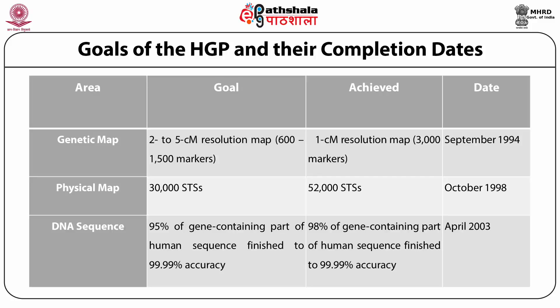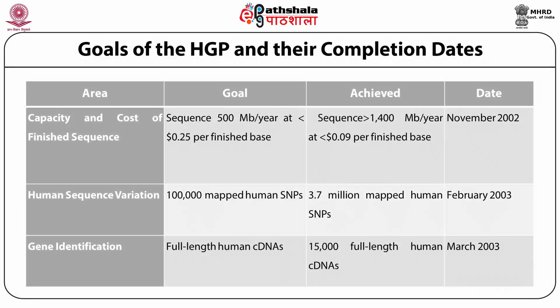The next important goal was DNA sequencing. Their initial goal was that 95% of the gene-containing part of human sequence is finished to 99.99% accuracy. In reality, 98% of the gene-containing part of human sequence was finished to 99.99% accuracy by April 2003. The next important goal was capacity and cost of finished sequence. The goal was to sequence 500 MB of genome per year at a cost less than 25 cents per finished base pair. In reality they were able to sequence greater than 1,400 MB per year at a cost of 9 cents per finished base pair by November 2002.